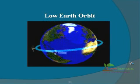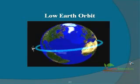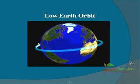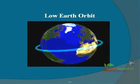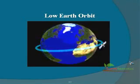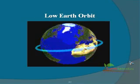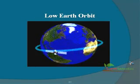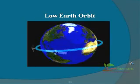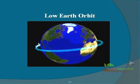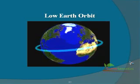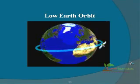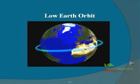Low Earth Orbit: When a satellite circles close to Earth, we say it's in low Earth orbit. Satellites in LEO are just 200 to 500 miles high and can circle Earth in about 90 minutes.